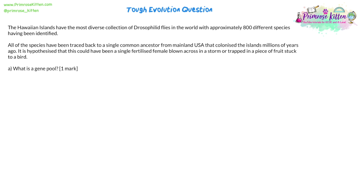Okay, so we're looking at an evolution and speciation question today, and these often take the same form — they look the same and the answers are almost identical. So: the Hawaiian islands have the most diverse collection of Drosophila flies in the world, with approximately 800 different species having been identified. All of the species have been traced back to a single common ancestor from mainland USA that colonized the islands millions of years ago. It's hypothesized that this could have been a single fertilized female blown across in a storm or trapped in a piece of fruit stuck to a bird. A lot of that last part is extra information we might not actually need for the question, but it could be helpful. It's not a question where we've never heard of these flies — it's just us applying our knowledge of evolution and speciation to this example.